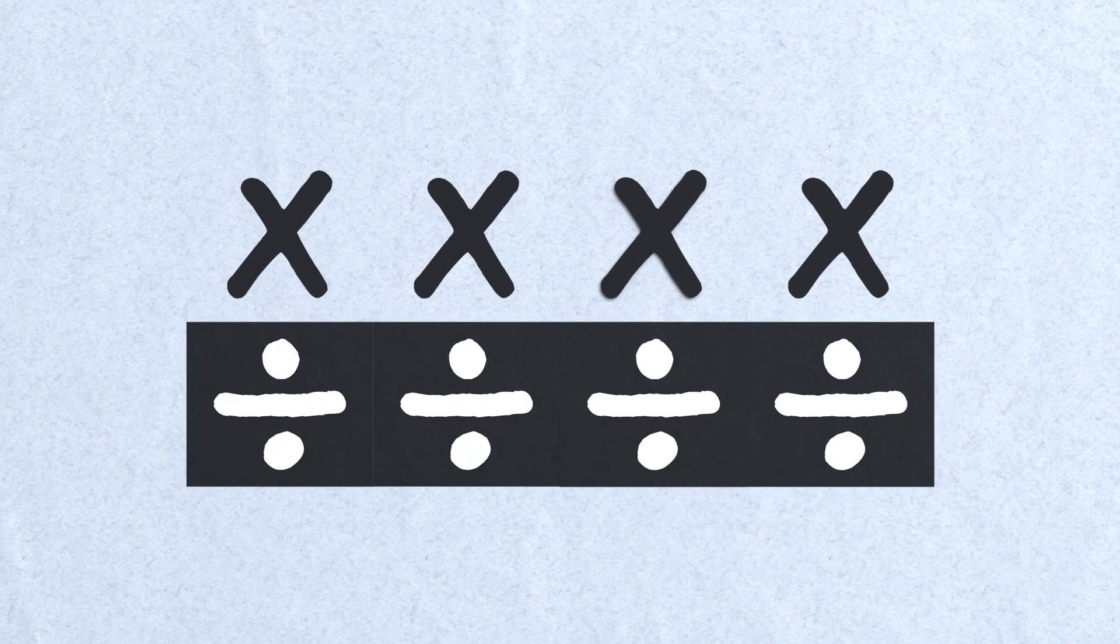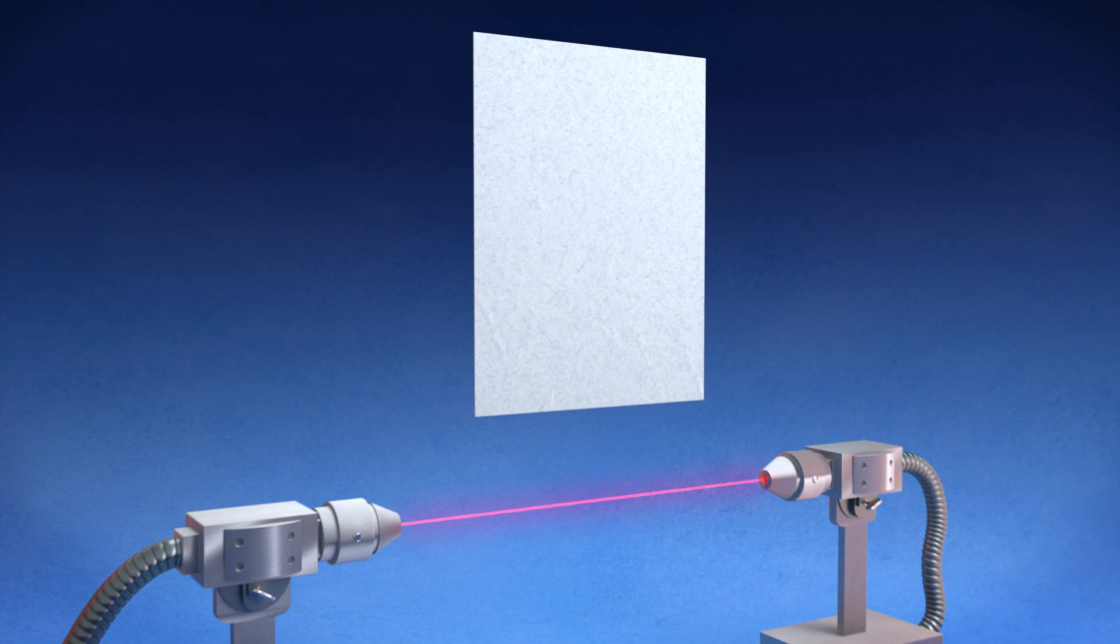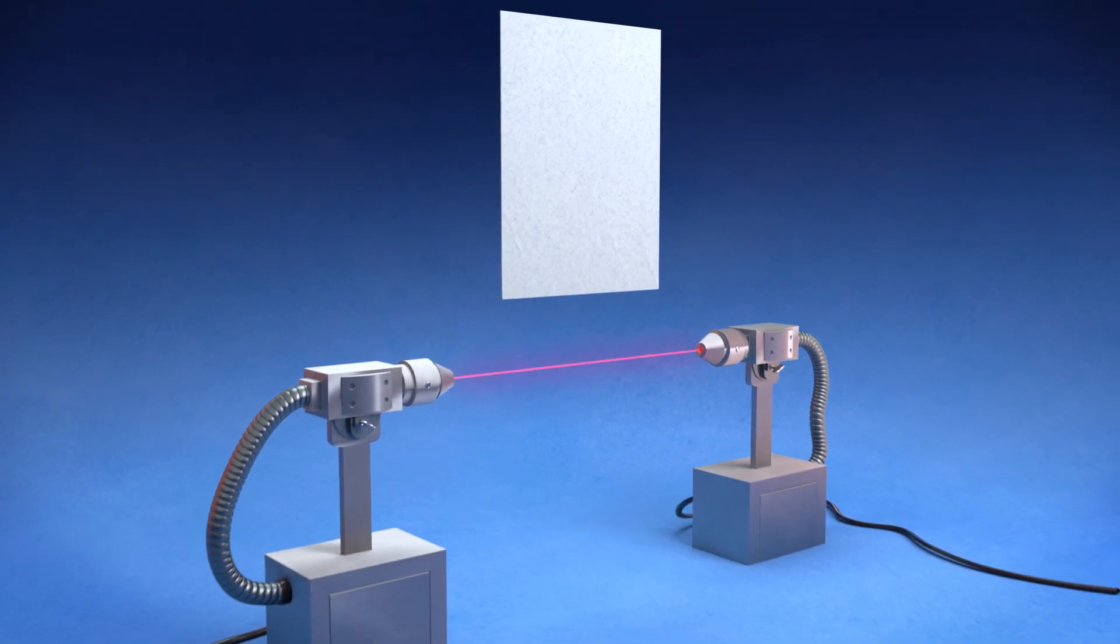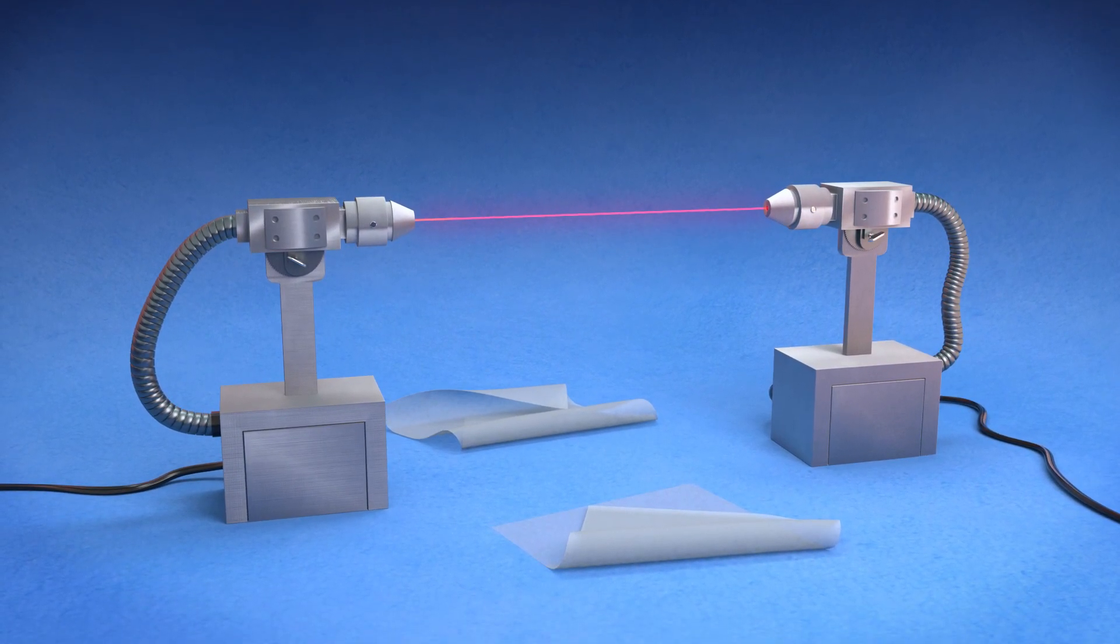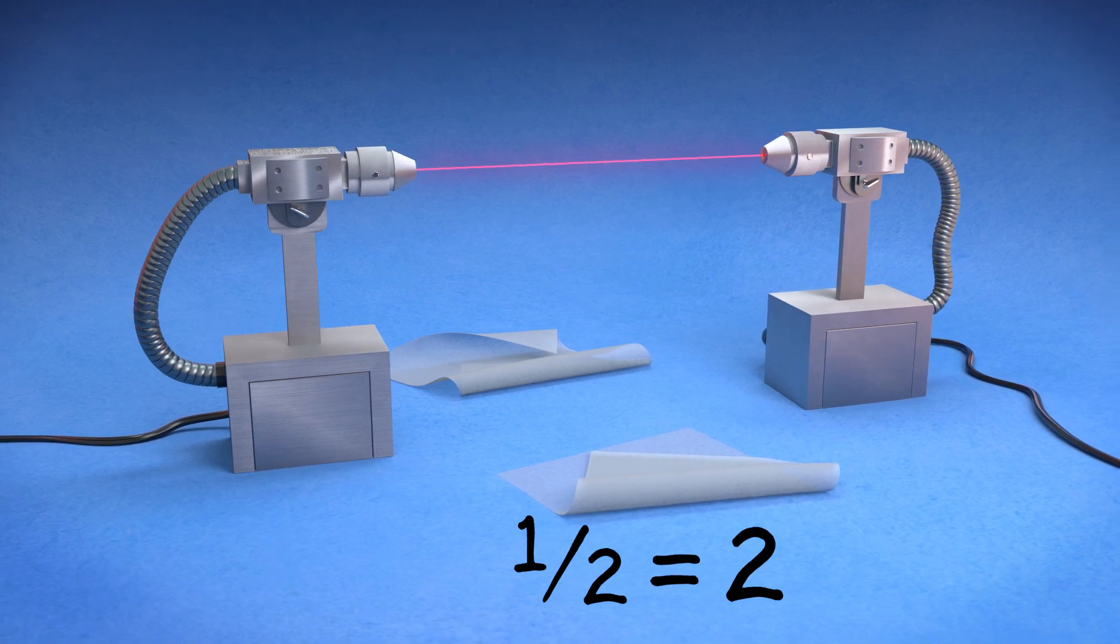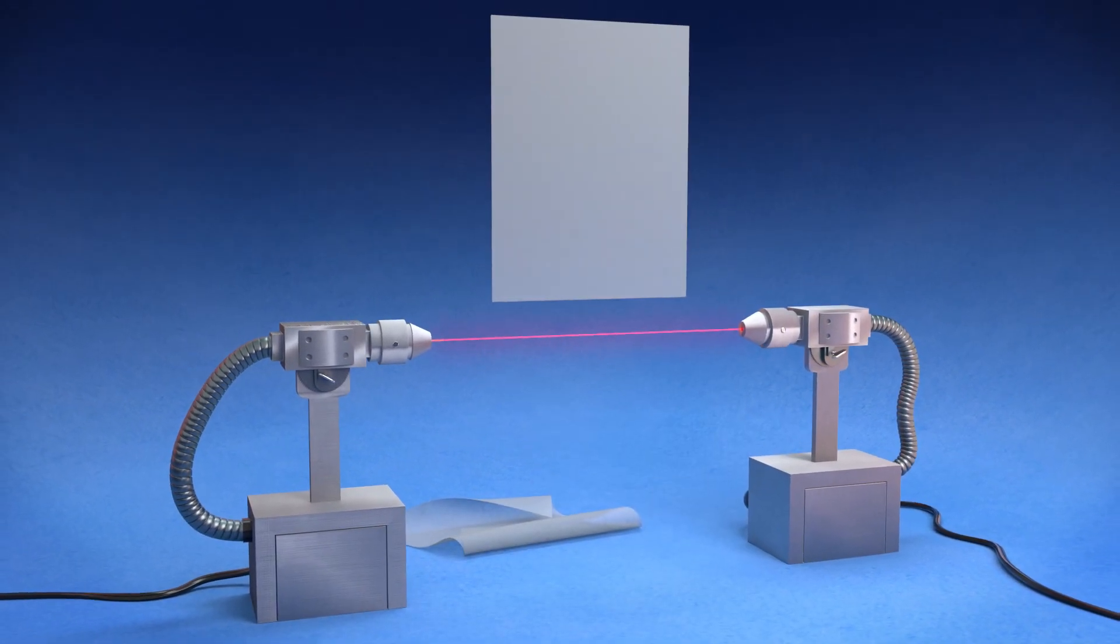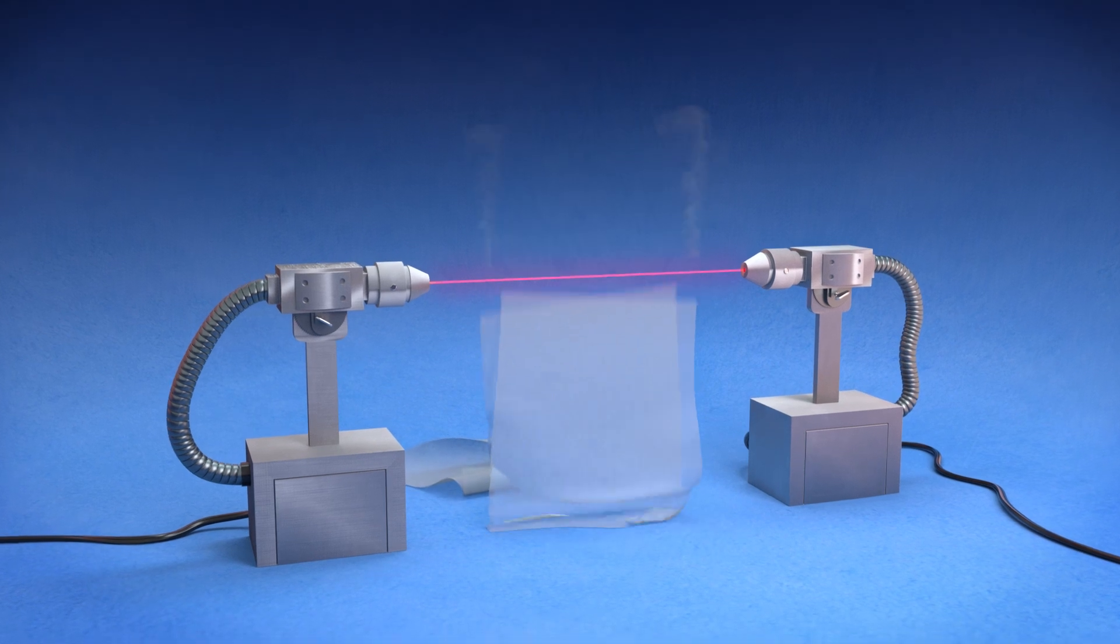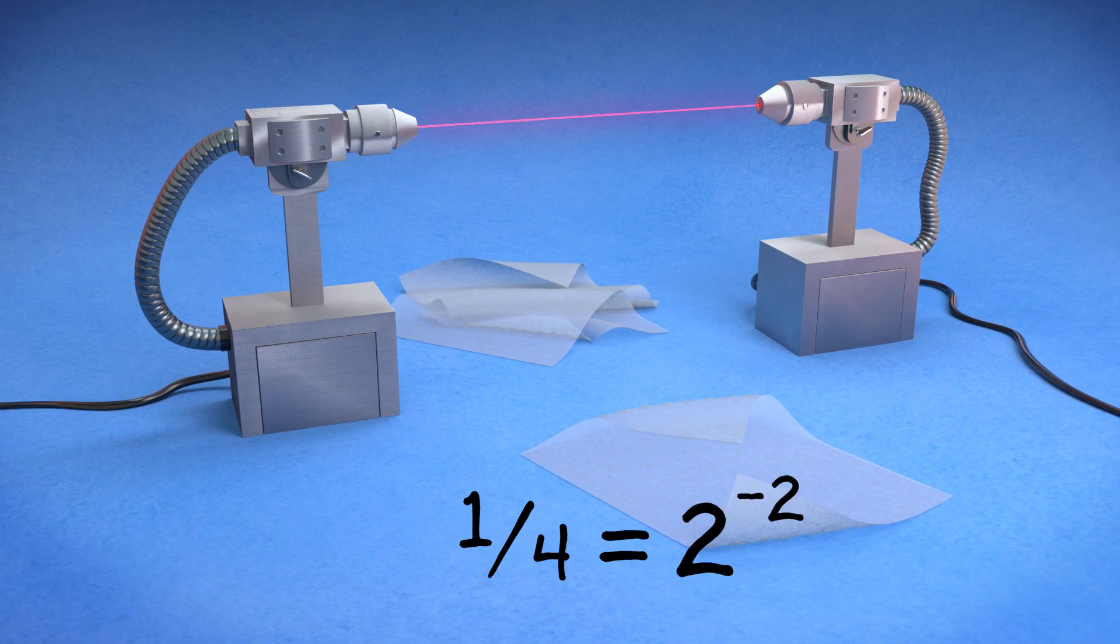Exponents describe repeated multiplication. With a negative exponent, we're repeating the opposite of multiplication, which is division. What's the opposite of doubling the thickness of a piece of paper? Slicing it in half. Slicing the paper in half makes it one half as thick, which we could describe as two to the power of negative one. Slicing one of these half thick pieces again gives us a piece that's one fourth of a page thick, which could be described as two to the power of negative two.